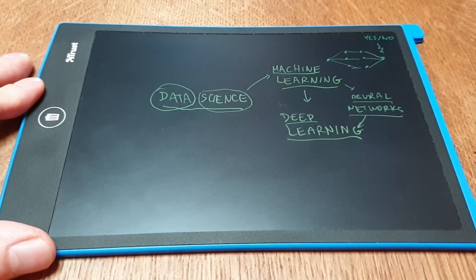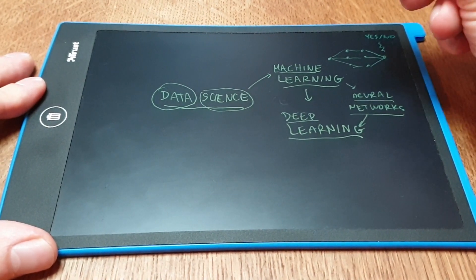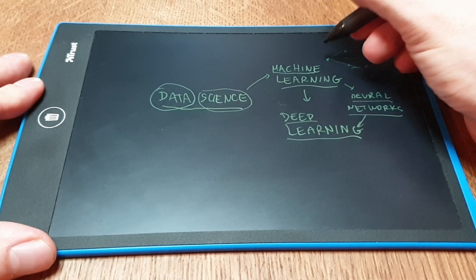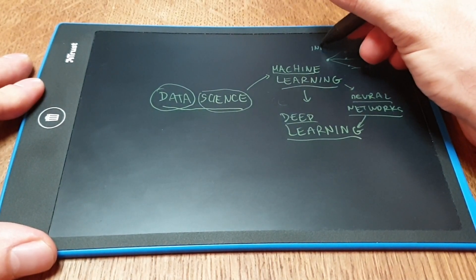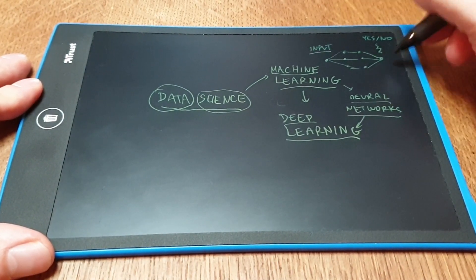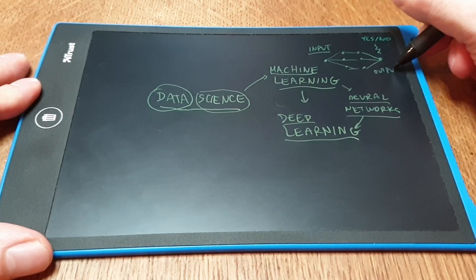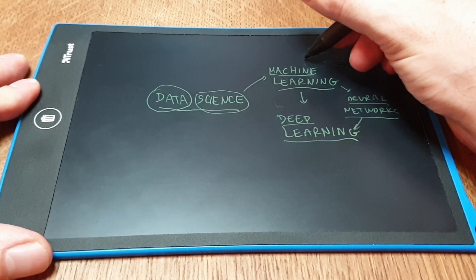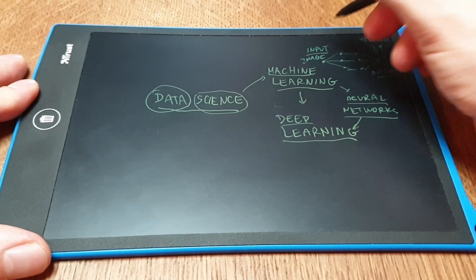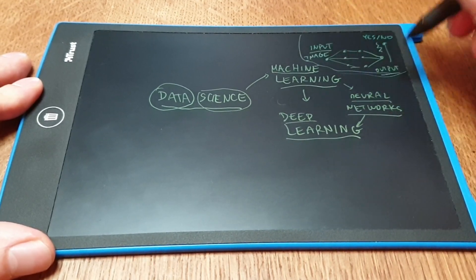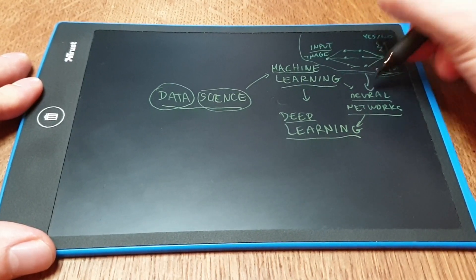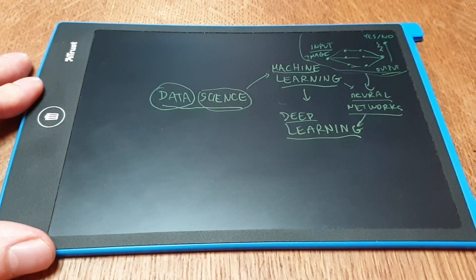For example, is this cat, is this photo presenting a cat or not? And you have to decide. And as an input, you have an image. As an output, you want to have this yes or no. So here's an image. And that's a very easy definition of a neural network. Also simplification.